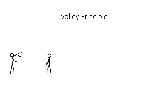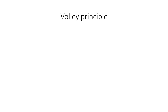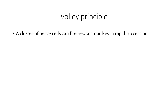Coming to the volley principle: this explains how low frequency sounds stimulate the nerve cells and hair cells. Here, a group of neurons or hair cells work together and fire together to produce a single action potential — that is the volley principle. The volley principle works for very low frequency sound and is not applicable for high or medium frequency sound. It applies when a person is listening to music or speech. For low frequency sound, one nerve alone cannot produce a proper action potential to send the signal to the brain — it is not enough, so clusters of nerves fire in rapid succession.